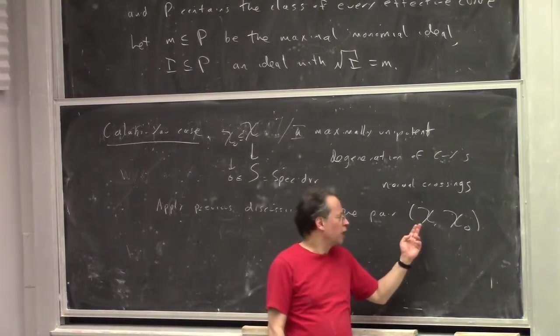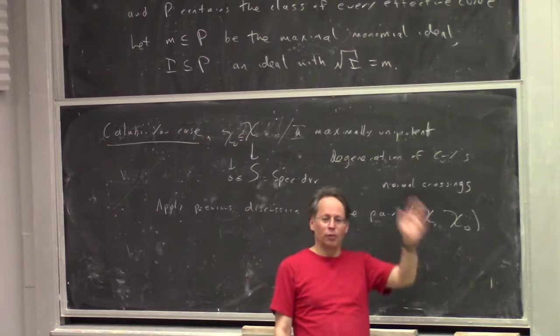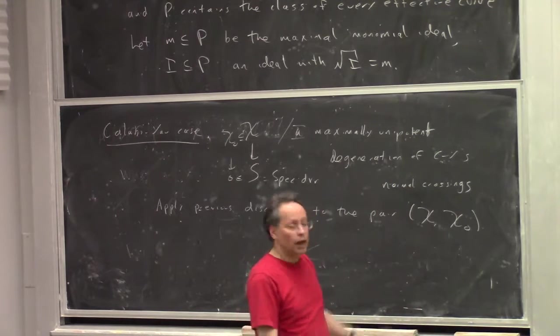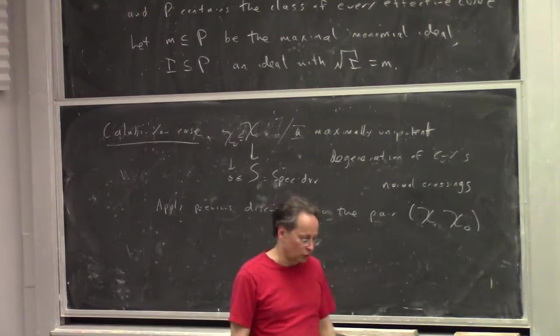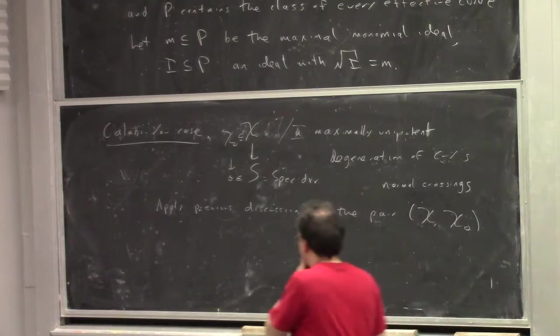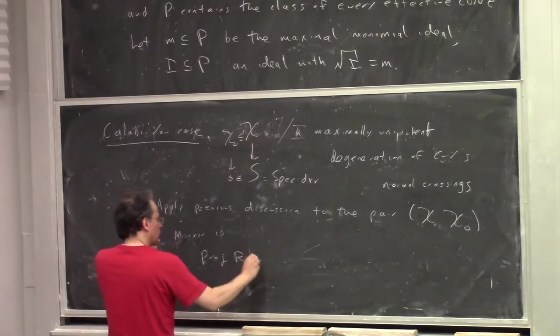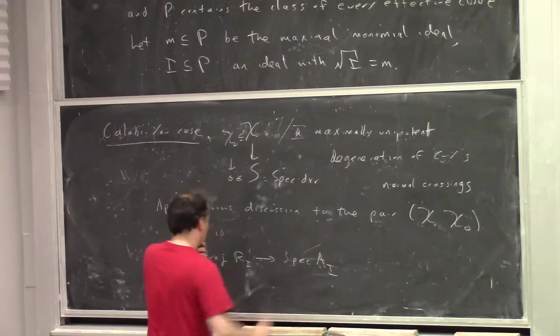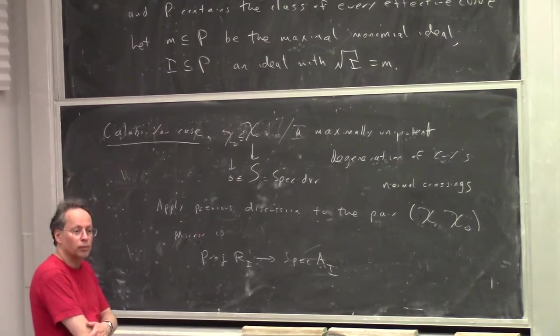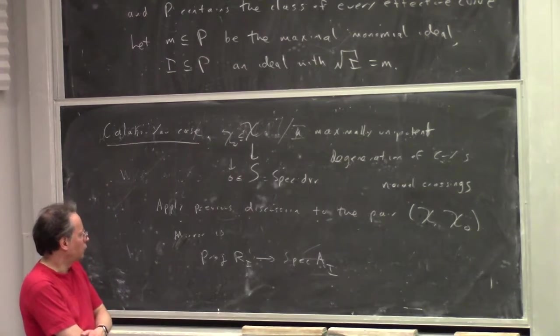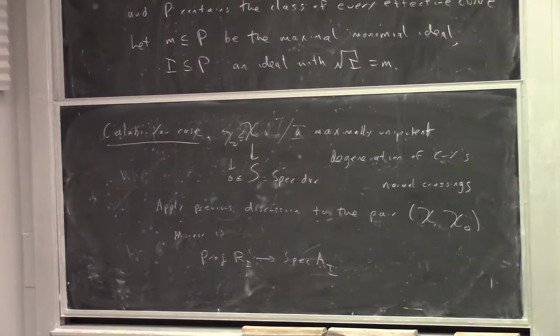So what we do is we apply the discussion to this pair. Now, this is in some sense a log Calabi-Yau. You might object to the fact that X is very non-compact. But if you focus attention only on curves that map to points in S, then you can actually go through everything. You have to work not with P as a subset of the homology of X, but the relative version of that.